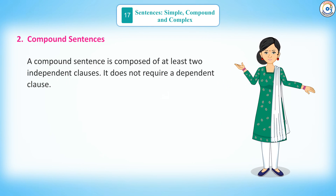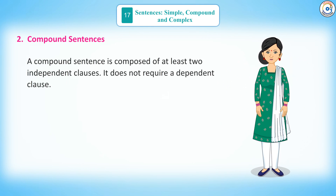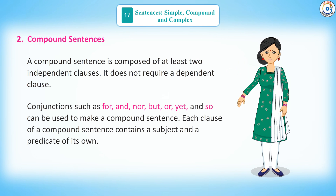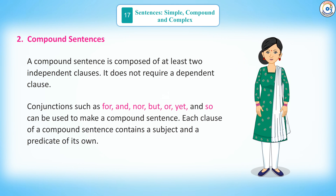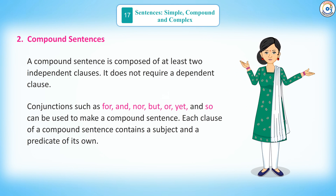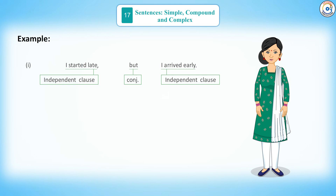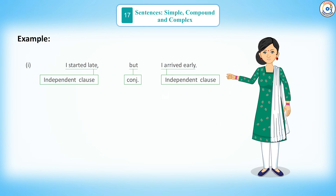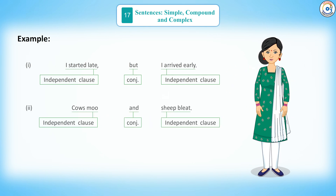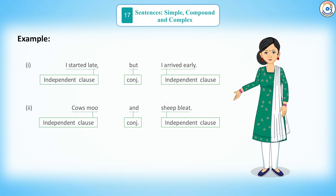2. Compound Sentences: A compound sentence is composed of at least two independent clauses. It does not require a dependent clause. Conjunctions such as for, and, nor, but, or, yet, and so can be used to make a compound sentence. Each clause of a compound sentence contains a subject and a predicate of its own. Example 1: 'I started late, but I arrived early.' – Independent clause + Conjunction + Independent clause. Example 2: 'Cows moo and sheep bleat.' – Independent clause + Conjunction + Independent clause.